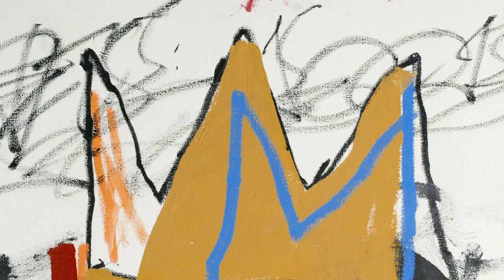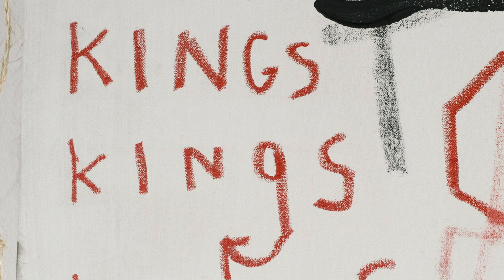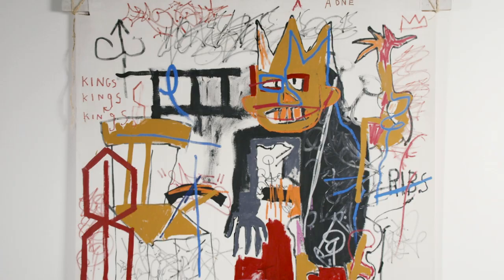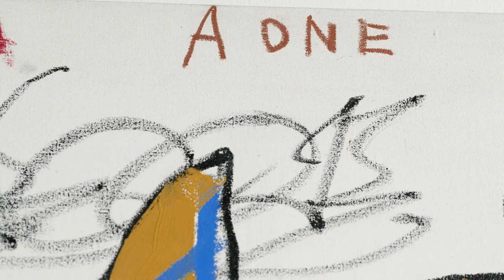Jean-Michel Basquiat was a critical member of the graffiti art scene in New York in the early 1980s. He often collaborated with a number of different artists, one of them being a guy named Anthony Clark, who was also known as A1.